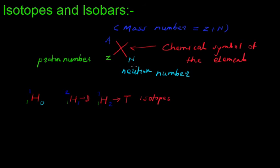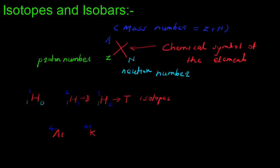Similar to isotopes, we have isobars, but isobars are a little different. Isobars are elements that have the same atomic mass but different atomic numbers and different numbers of neutrons. For example, argon has an atomic mass of 40, potassium has an atomic mass of 40, and calcium also has an atomic mass of 40.